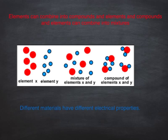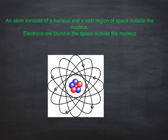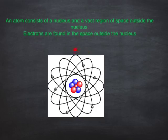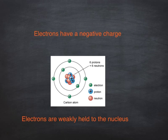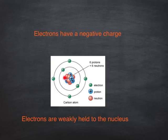We also know that different materials have different electric properties. An atom consists of a nucleus in the center and a vast region outside of the nucleus that is empty space. The little tiny electrons are found in this empty space outside of the nucleus. Electrons have a negative charge — they're very tiny and they have a negative charge. The nucleus has a positive charge because of the protons, and the electrons outside of the nucleus are held to the nucleus in the atom because of the attraction of the negative and the positive charge, but they're held very weakly, and that's going to be important.